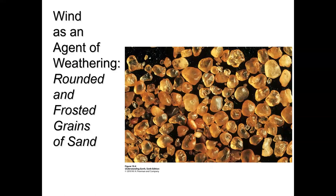In deserts, because you don't have as much water, the main agent of weathering, erosion, and transport is wind. One indicator of this is grains of sand that have been rounded and frosted. The frosting comes much like glacial polish — these grains have been sandblasted against each other, polishing their surfaces and causing microscopic etches and pits that scatter light, making them no longer clear. So frosted sand grains are an indication of desert sands.